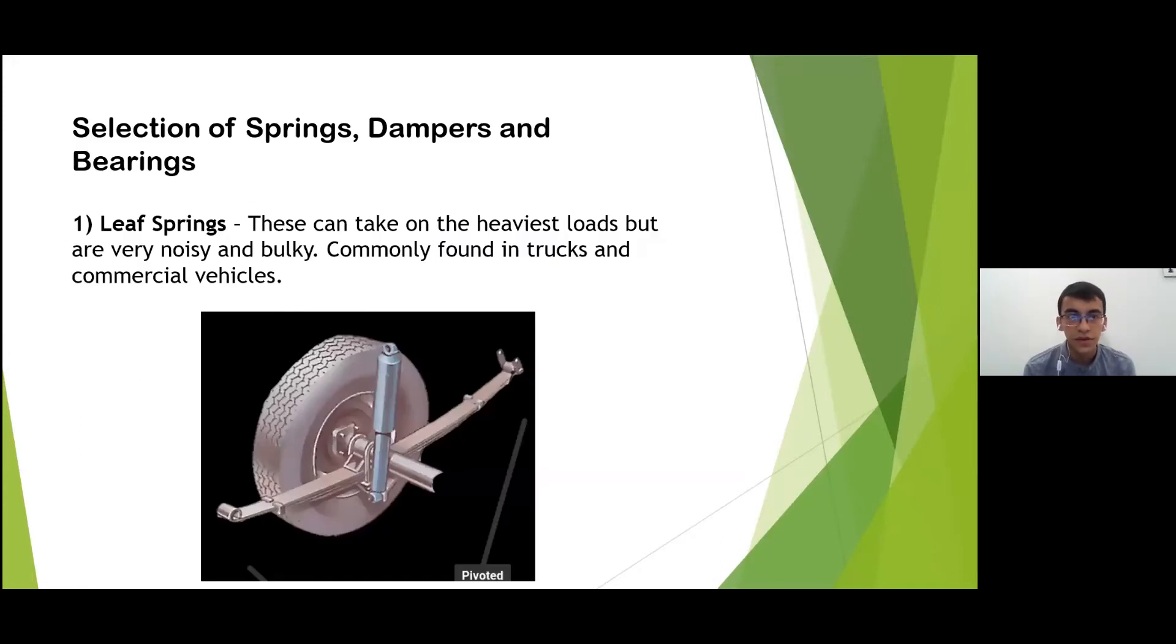Let's look into how we select springs, dampers and bearings. There are essentially three types of springs: leaf springs, coil springs and torsion bars. Leaf springs can take the heaviest of loads but a drawback is that they are very noisy and bulky, so these can be commonly found in trucks and commercial vehicles that carry heavy loads.